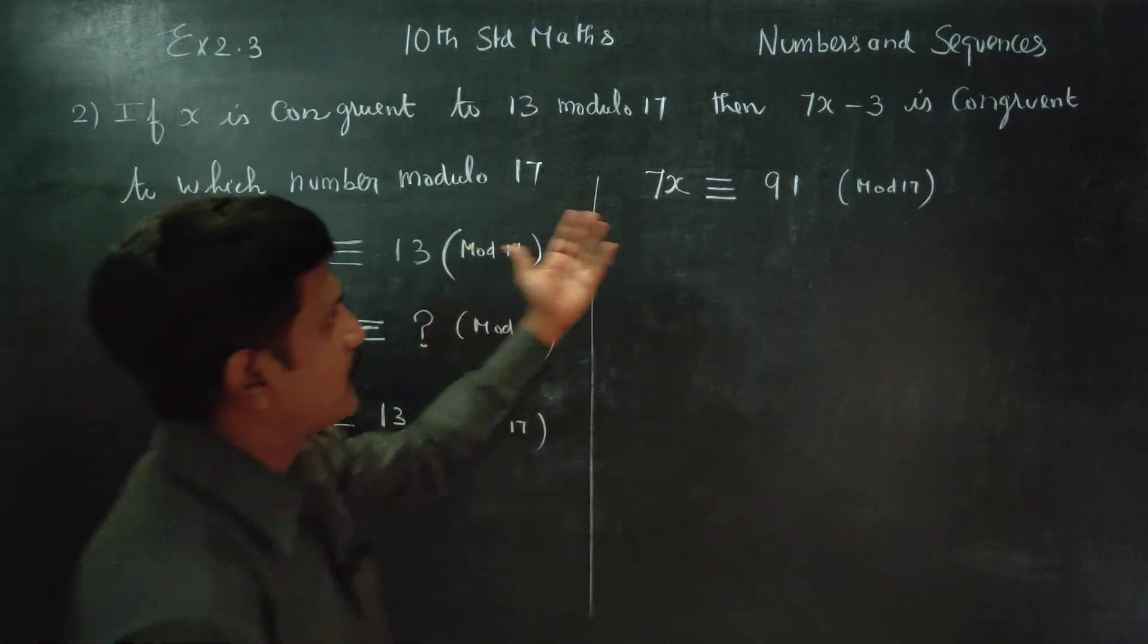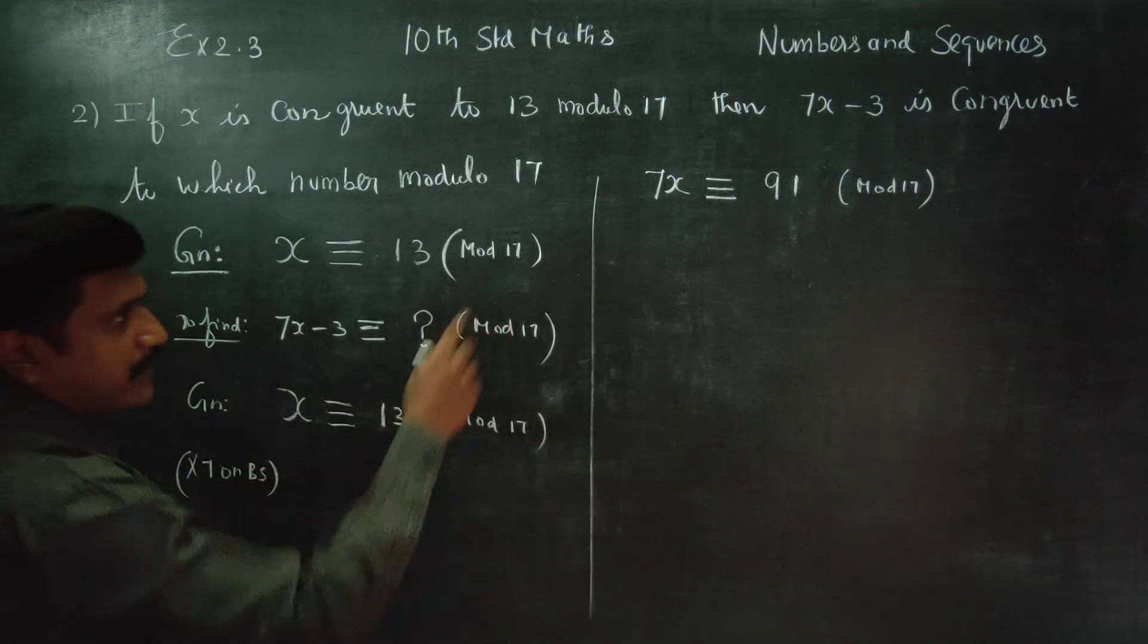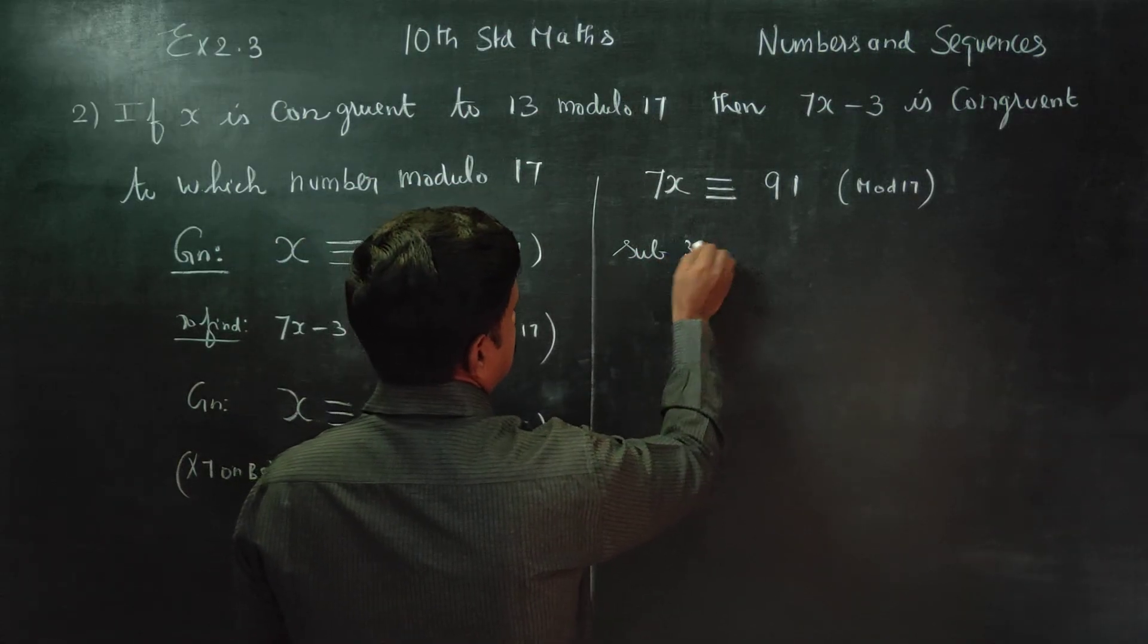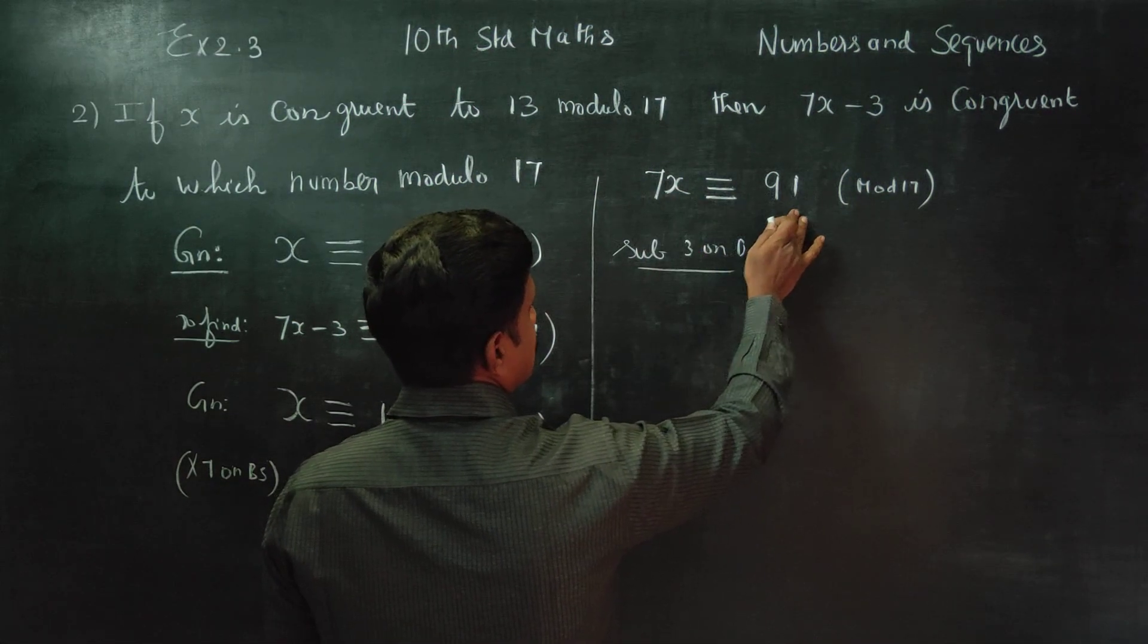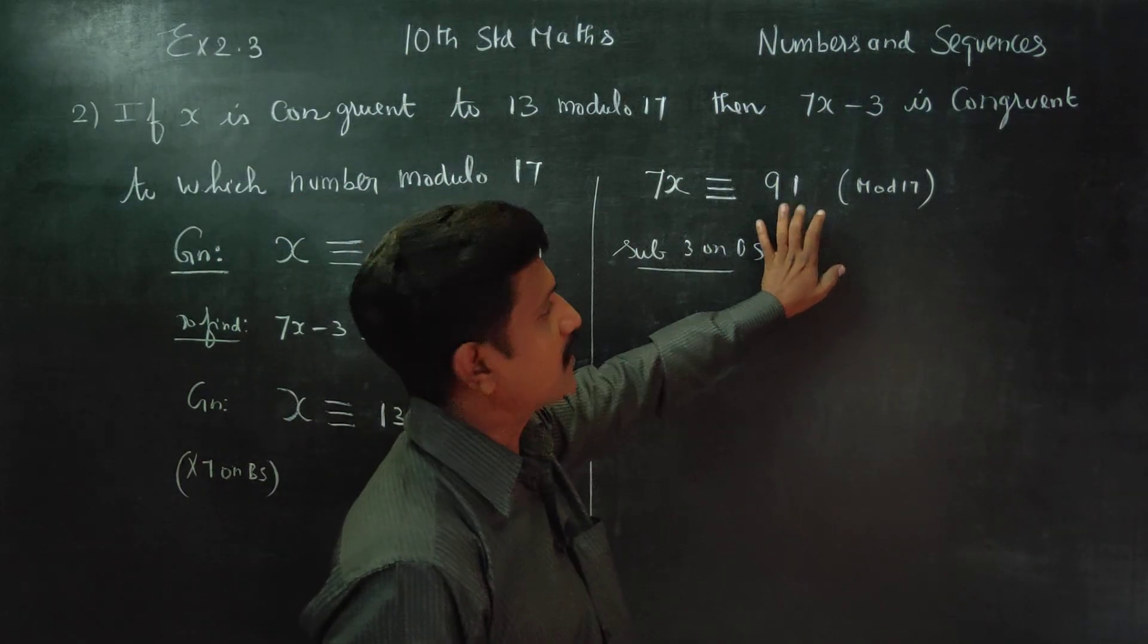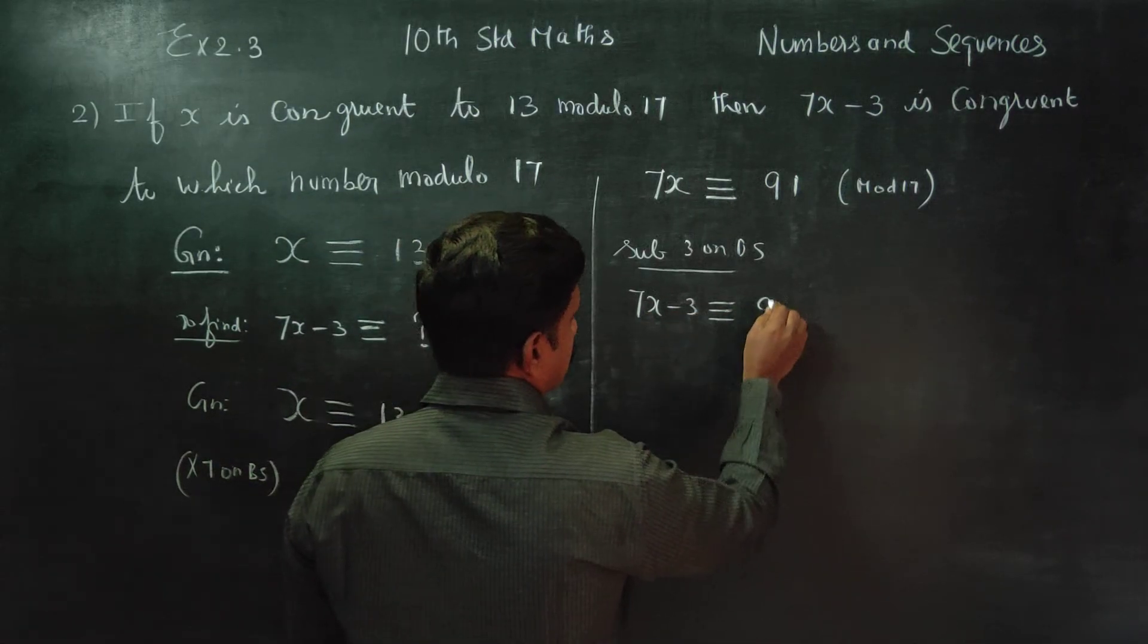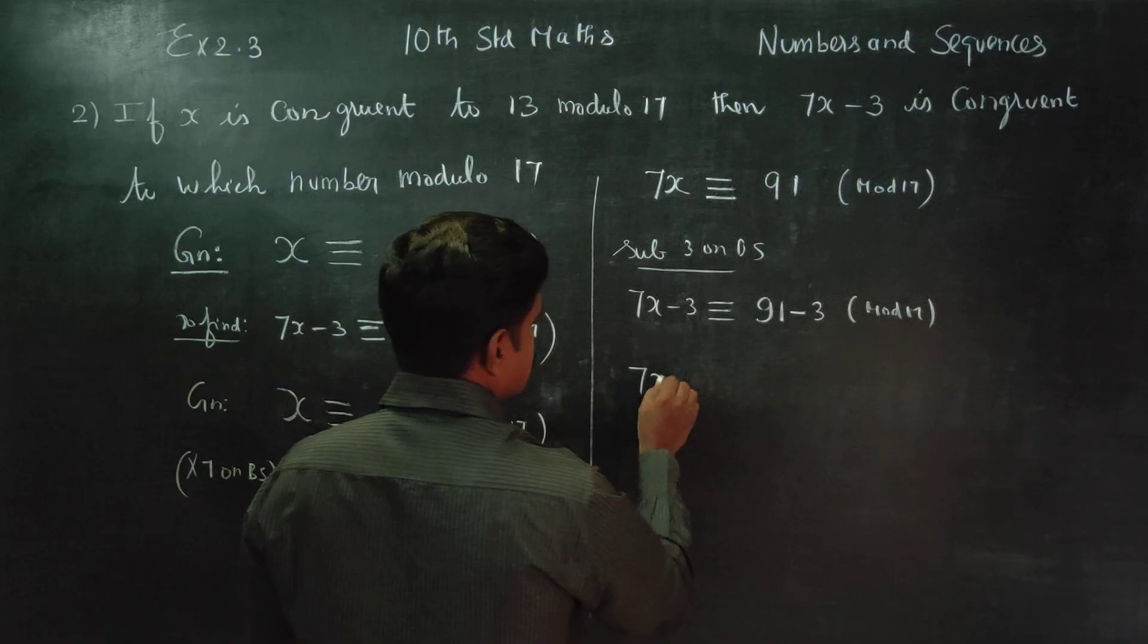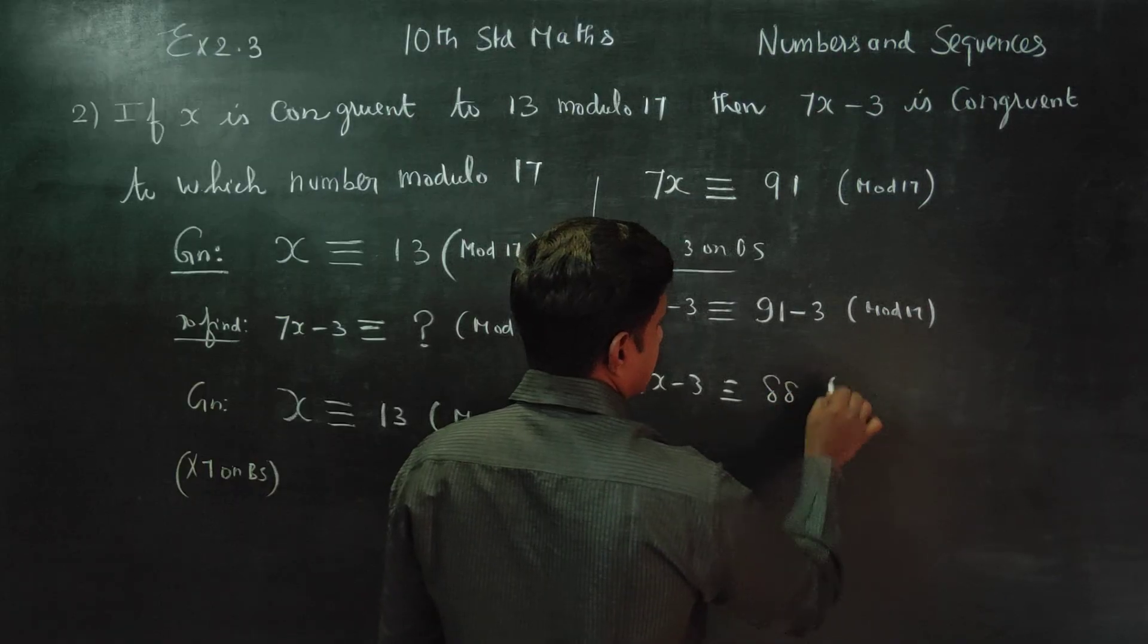I am going to subtract. 7x is congruent to 13 modulo 17. I am going to subtract. 7x is congruent to 88 modulo 17.